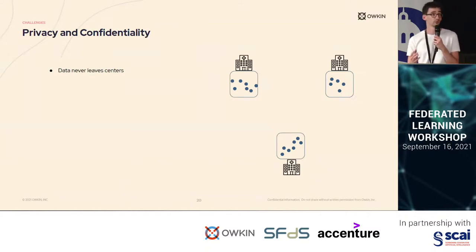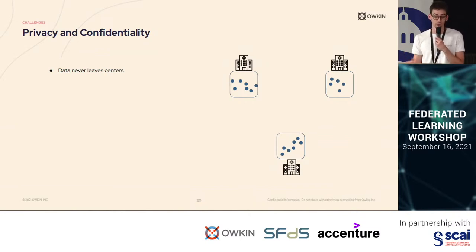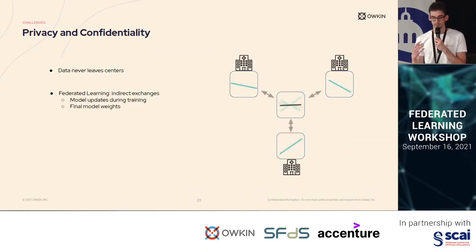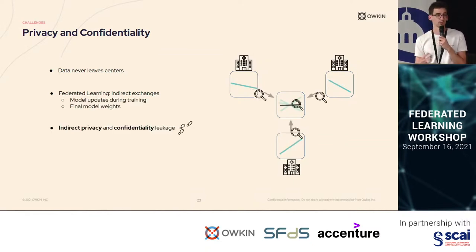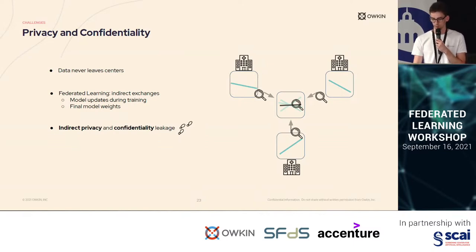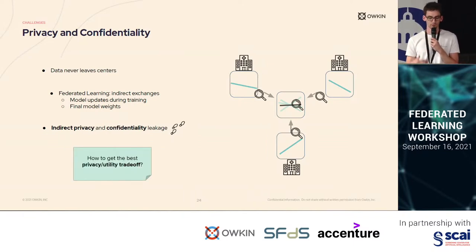In terms of technical challenges, there is the challenge of privacy and confidentiality. Yes, data never leaves the centers with federated learning, but there are indirect exchanges of weights and updates, and therefore there could be indirect privacy and confidentiality leaks. I think there is still a lot of work to be done to improve the privacy-utility trade-off in this direction.